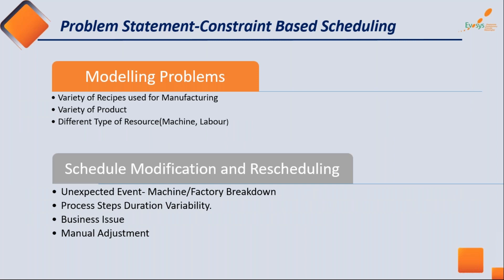While identifying problem statements from particular industries, we found that modeling problems are the basic challenge in the current manufacturing scenario. First: variety of recipes used for manufacturing. For example, in semiconductor manufacturing, even if the product is the same at a base level, if the chip design changes from customer to customer or order to order, the process time for different machines and required skill sets will change.